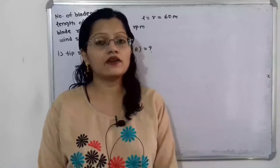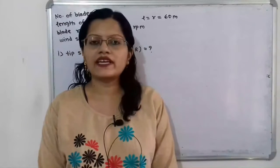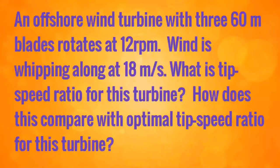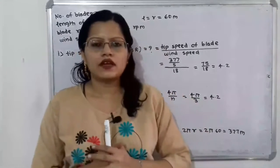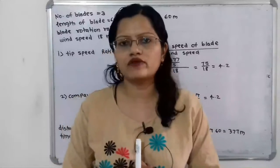Hello friends, this is Priyanka. Today we are going to solve a problem on wind energy for the calculation of tip speed ratio. First I will read the given problem: an offshore wind turbine with 360 meter blades rotates at 12 rpm, wind is whipping along at 18 meter per second. What is the tip speed ratio for this turbine, and how does this compare to the optimal tip speed ratio?